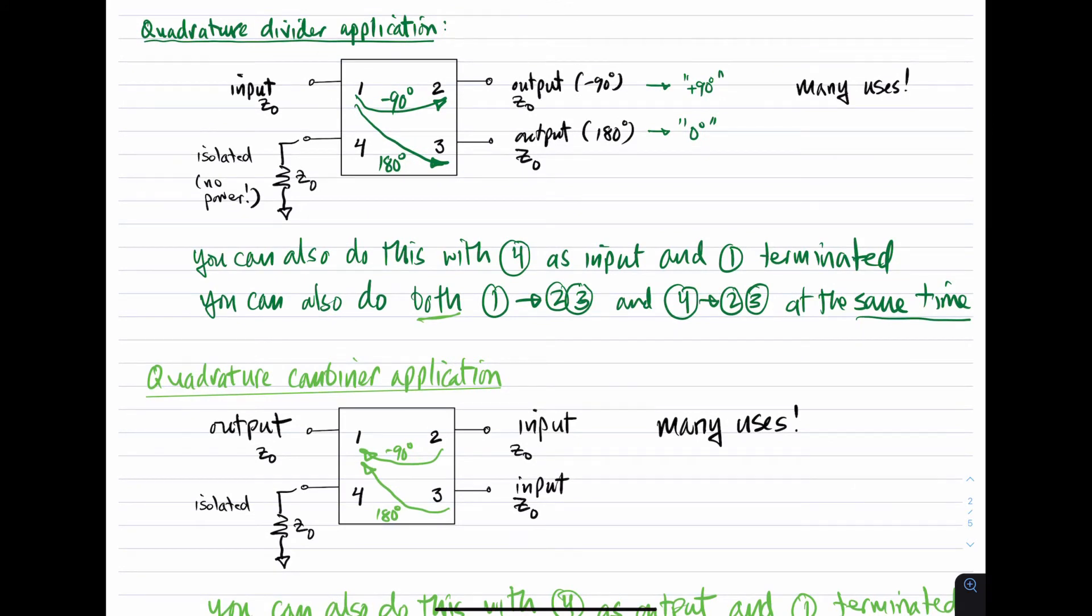So what can we use this kind of thing for? Well, you can of course use it as a divider. This was something we inferred from the S-parameters. In the divider application, or one of the two possible ways to do this as a divider, you could have the input at port one and you could split that input two ways, namely to ports two and three. Port two would get a minus 90-degree phase shift. Port three would get a 180-degree phase shift. And there you have it, a quadrature divider.